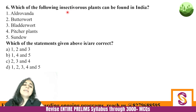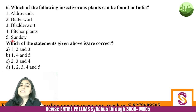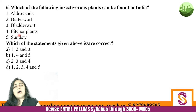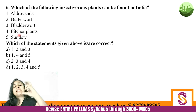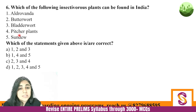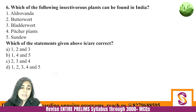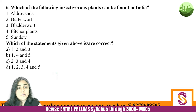Next question: Which of the following insectivorous plants can be found in India? Alvrovanda, Butterwort, Bladderwort, Pitcher Plant, and Sundew. Note the difference between invasive species and insectivorous plants: insectivorous plants are plants which eat insects — they are carnivorous in nature. All these species are found in India. Not necessarily all of them are endemic to India — they are found elsewhere too. One of the pitcher plants is found just in India. The answer is D — all of them.